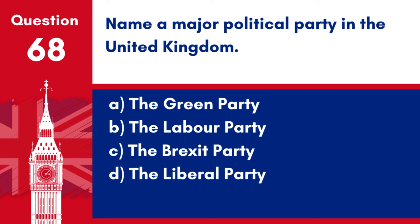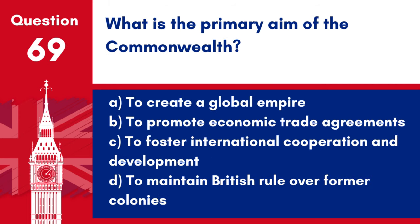Question 68. Name a major political party in the United Kingdom. a. The Green Party. b. The Labour Party. c. The Brexit Party. d. The Liberal Party. Answer: b. The Labour Party. The Labour Party is one of the major political parties in the United Kingdom, traditionally representing the working class and advocating for social democracy.